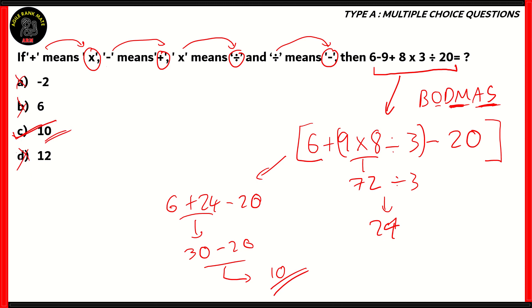Therefore option C, 10, turns out to be the right option. Options A, B, and D are incorrect because their answers are numerically different from the answer that we got, which is 10. So when it comes to changing operators, it's a good idea to use BODMAS, because that's how you will be able to correctly use the arithmetic operators. Using that, we found that option C, 10, is the right answer.